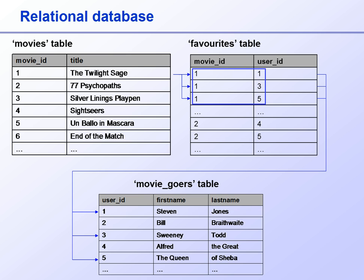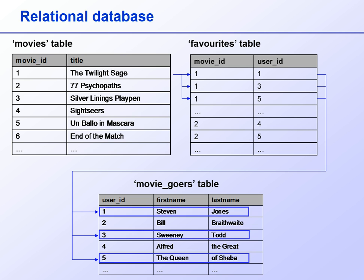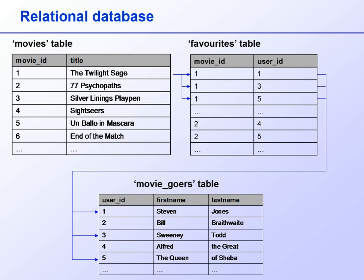Here we have the movie ID 1 linked to user IDs 1, 3, and 5 — the IDs of the three users who have that movie as a favourite. Then we link these user IDs to their details in the moviegoers table. This approach avoids all duplication of data, and a database which consists of a number of tables linked in this way is called a relational database. This course will demonstrate how to set up a relational database for our Favourite Movies project and deploy it over the web.